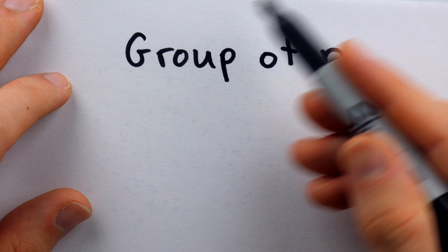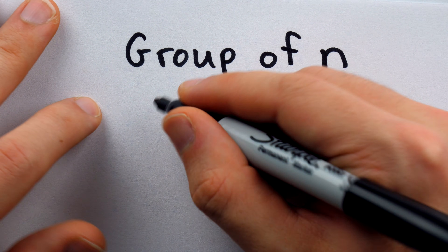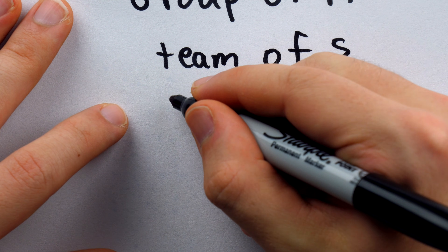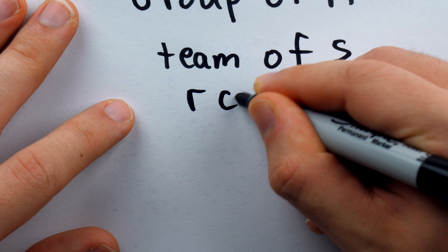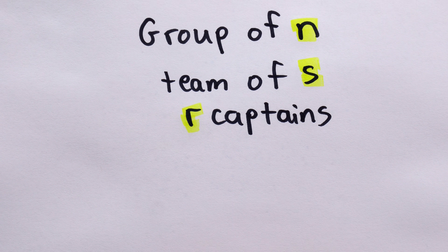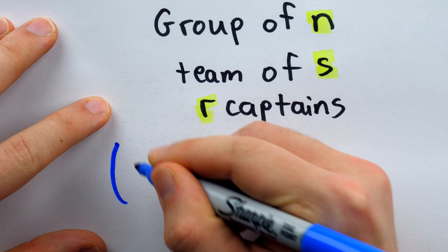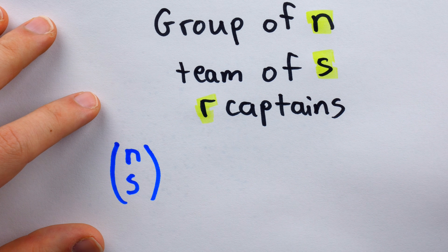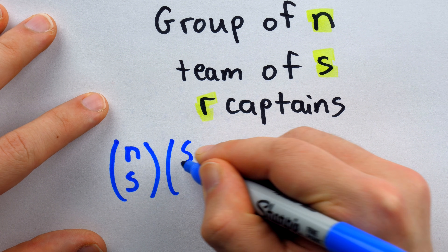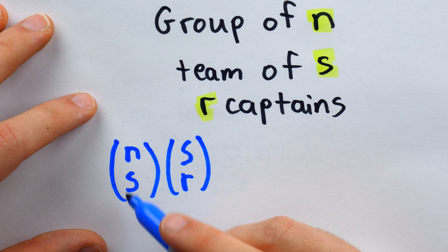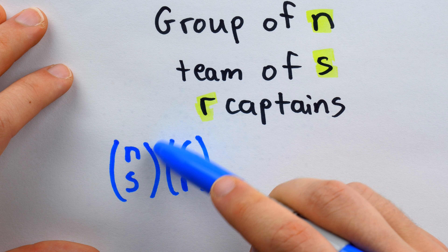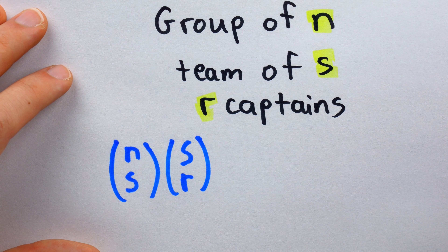Here's another example. Say we have a group of n people and we're trying to count the number of ways to pick a team of size s with r captains. One way is to first count the number of ways to pick a team of size s, which is n choose s. Then for every way we pick a team of s from n people, there are s choose r ways to pick r captains from that team. So n choose s, times s choose r, counts the number of ways to pick the team and then pick r captains from it.